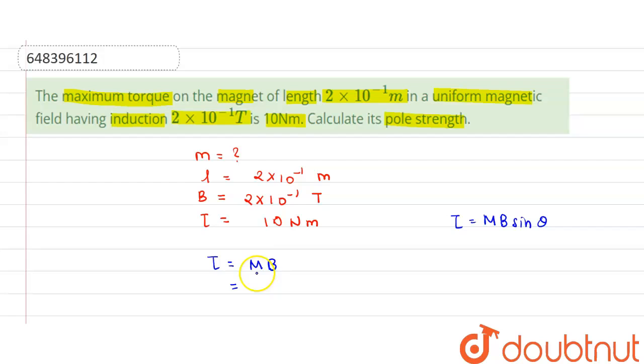And magnetic moment is given by small m × L. Here m is the pole strength, L is the length of the magnet, and B is the magnetic induction.